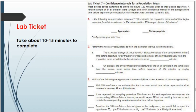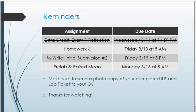The last thing for the lab is the lab ticket. There should be a file for the lab ticket on the virtual lab resources page to print out, or you can look at the picture posted on the slide. Take about 10 minutes to work on it. When you're done, send a photo of both the ILP and the lab ticket completed to your lab section GSI via email — it's fine to take a picture on your phone. That's it for the lab this week. Thanks for watching and stay tuned for next week's lab.